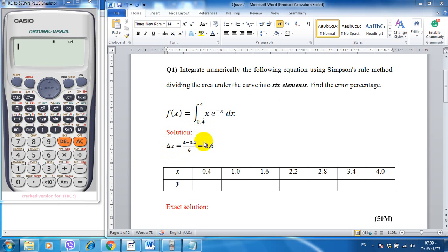Now by starting from 0.4 and then adding delta x 0.6, we have 1, 1.6, 2.2, up to 4.